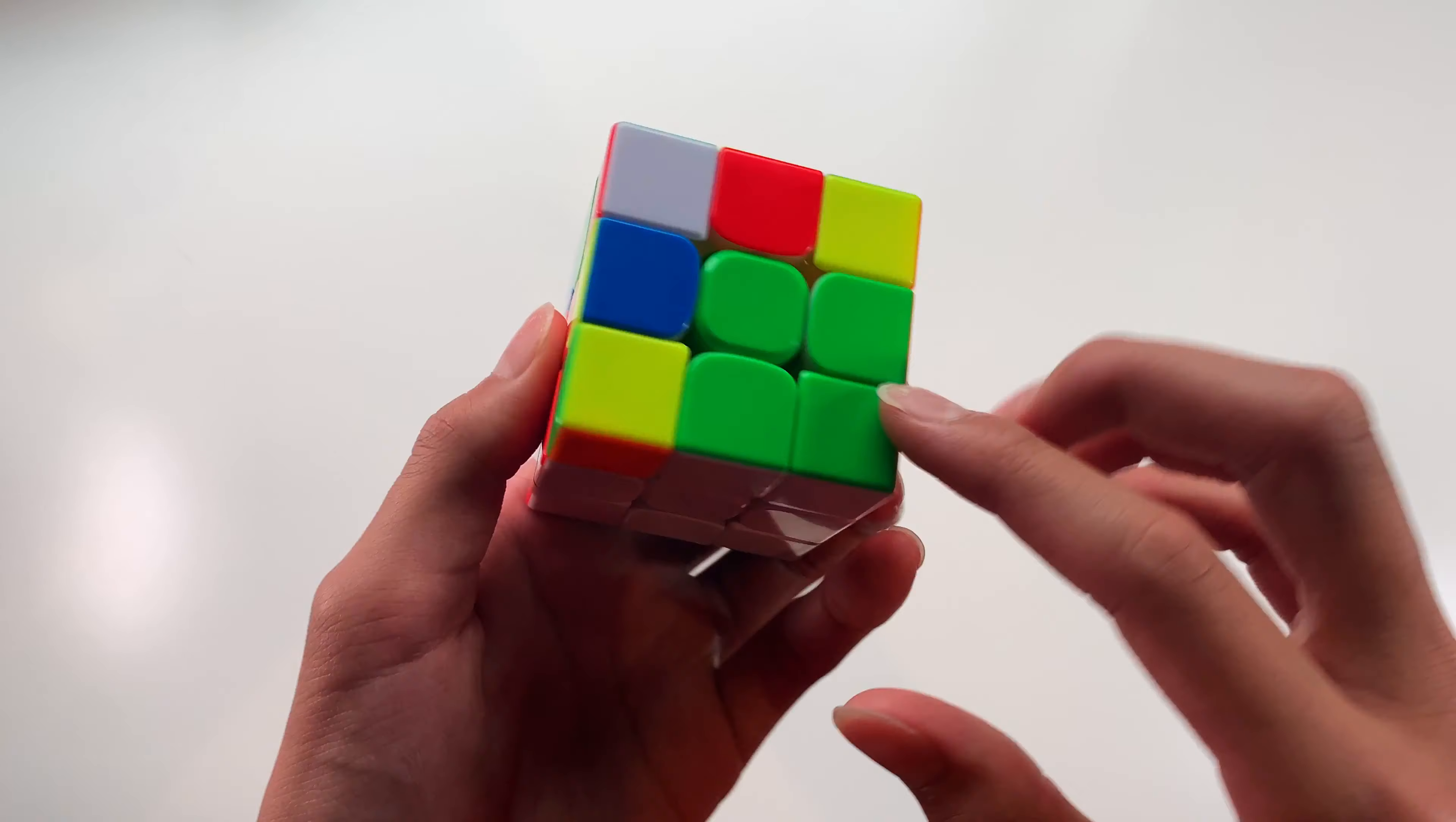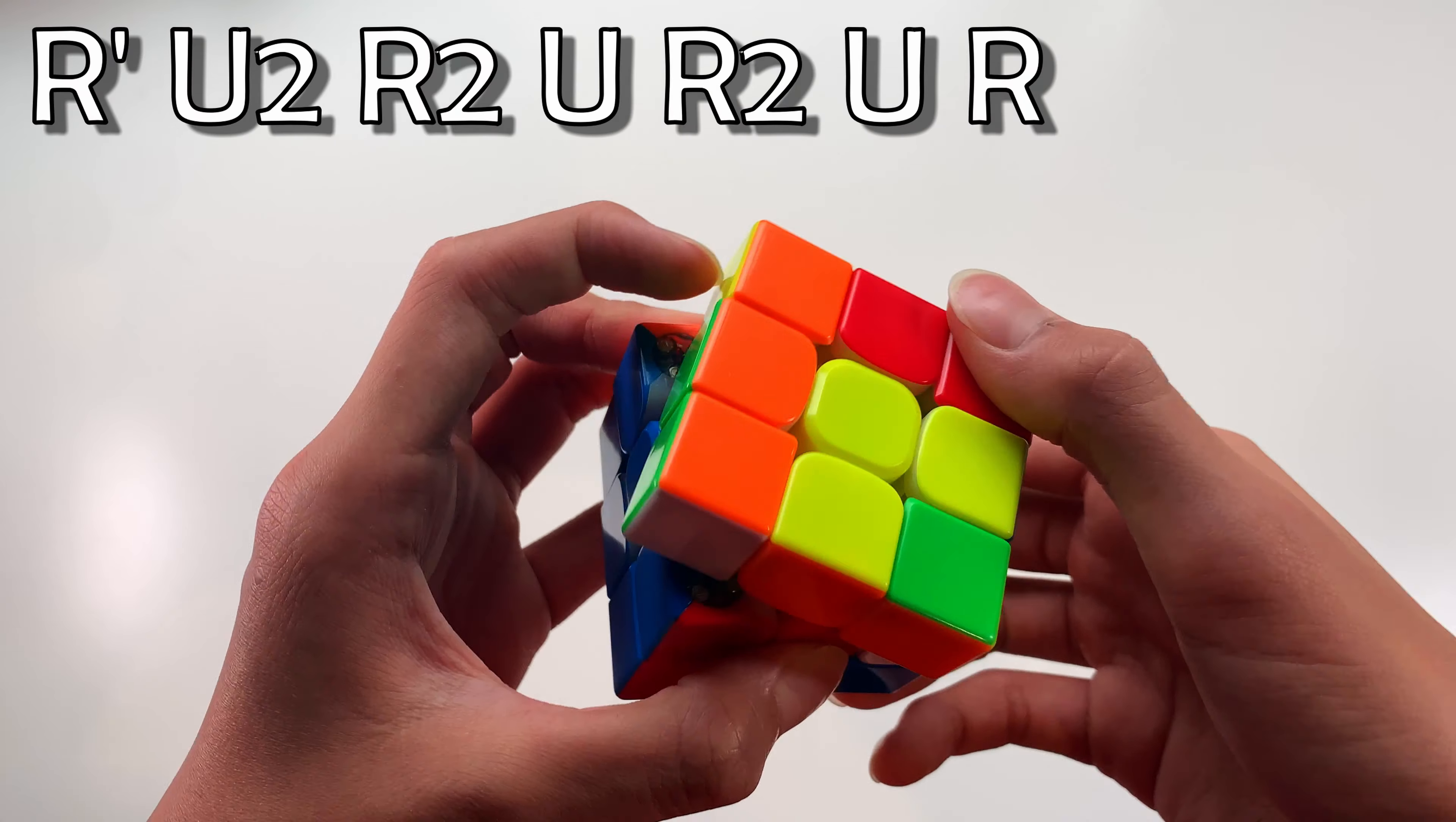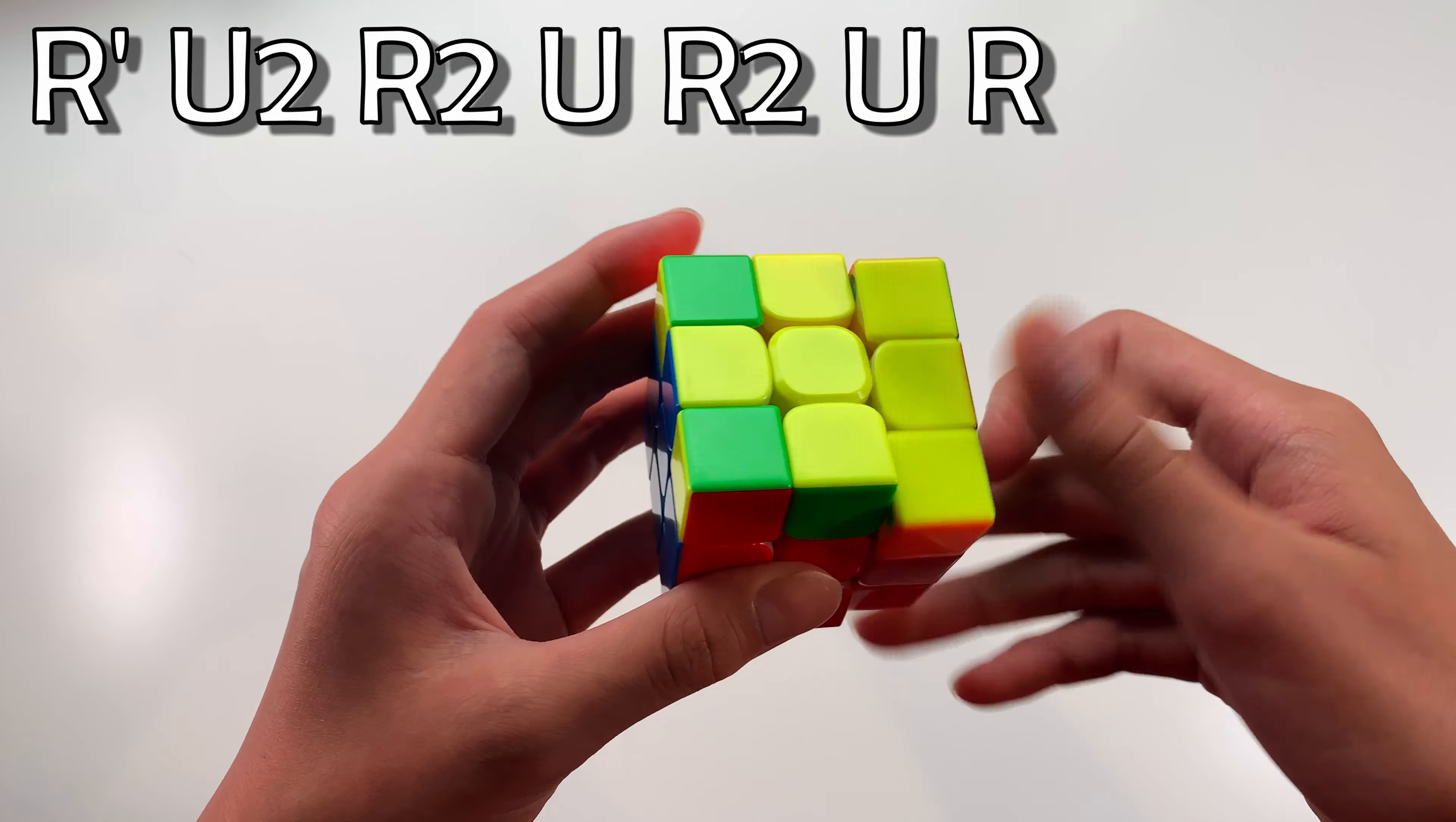Another way of doing this is treating this pair as unsolved, just pairing it up as per normal, and then inserting this pair into the back.